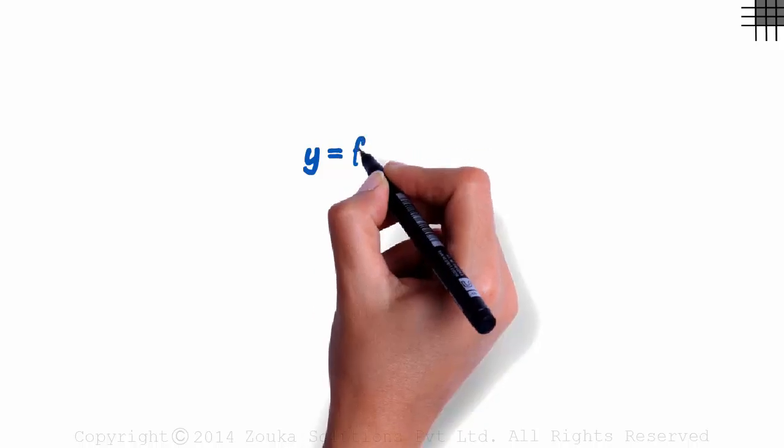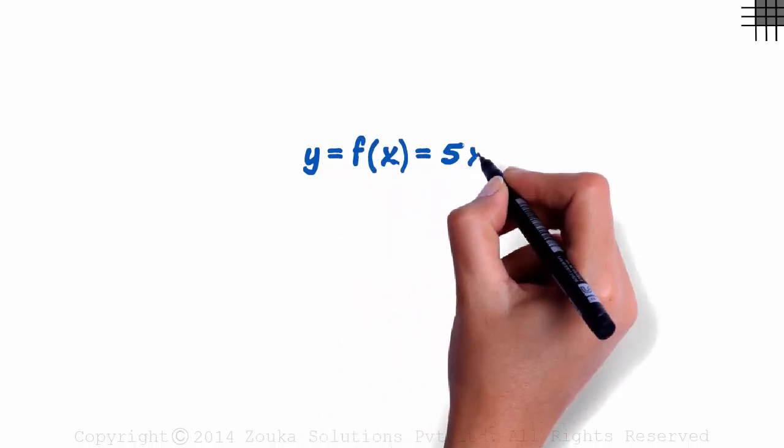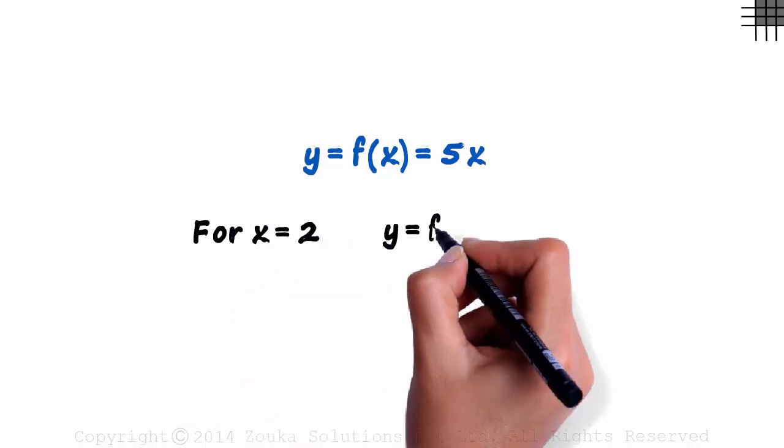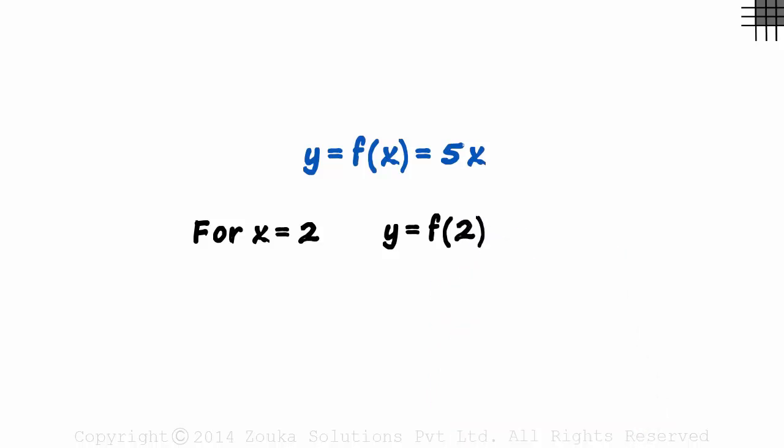Let's understand this well. Y is equal to f of x is equal to 5x. What will happen for x equal to 2 as the input? Y will be equal to f of 2. It is a function which takes the value of x as the input and gives 5x as the output.